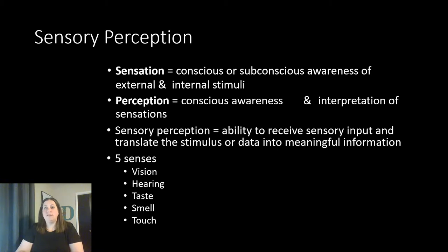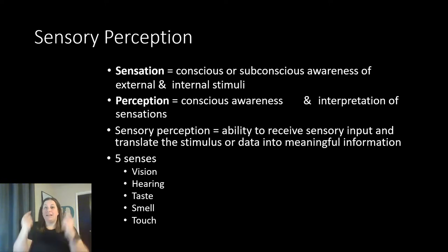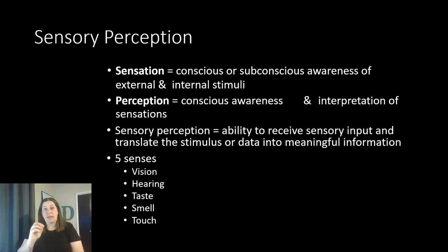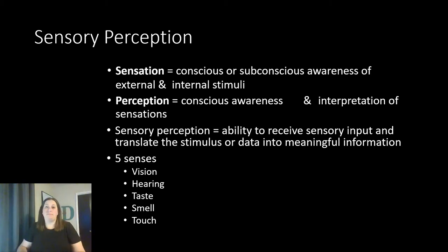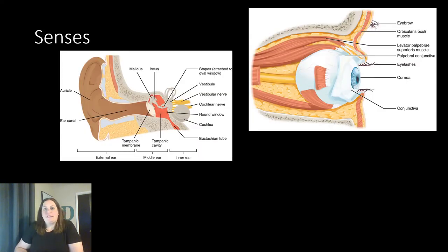The top four senses — vision, hearing, taste, and smell — are what we call special senses, because they are located specifically in one area of the body. Vision is solely in your eyes, hearing is in the ears, taste is on the tongue, and smell is in the nose. Touch is more of what we call a general sensation because it's spread throughout the whole body.